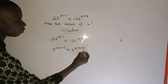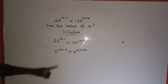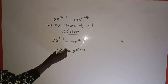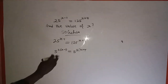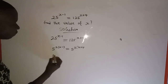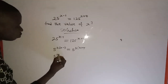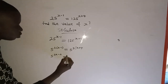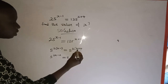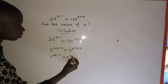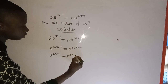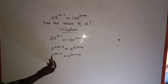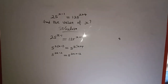Now, if you have any number raised to a power and that power is attached to it, we are going to multiply the powers. So 5 to the power of 2 times s minus one gives us 2s minus 2, and this is equal to 5 to the power of 3 times s plus four, which gives us 3s plus 12.